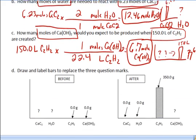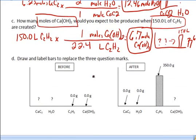And finally, it says draw and label the bars to replace the three question marks. So here's what it looks like before. We don't know how much of these reactants we have. But we know we start with some amount of these two guys. And we know the reaction hasn't started yet. It's before. So they haven't mixed. They haven't made any products. So we expect these guys to be zero. That's really not important at this point. It's not going to help us solve anything. It just tells us the reaction hasn't started yet.